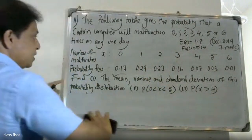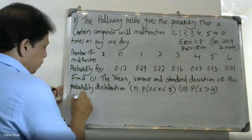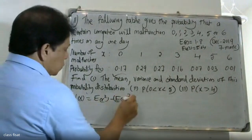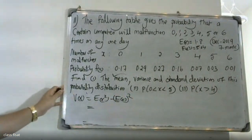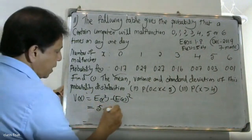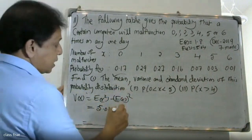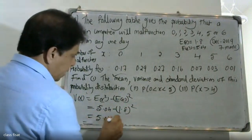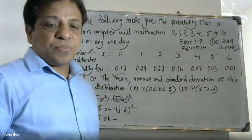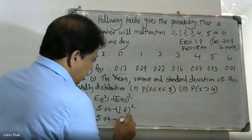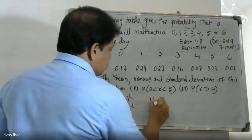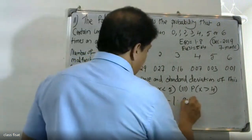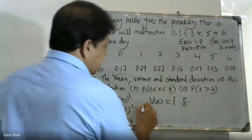The variance is: Var(X) = E(X²) − [E(X)]². So Var(X) = 5.04 − (1.8)² = 5.04 − 3.24 = 1.8. Therefore the variance of x is equal to 1.8.